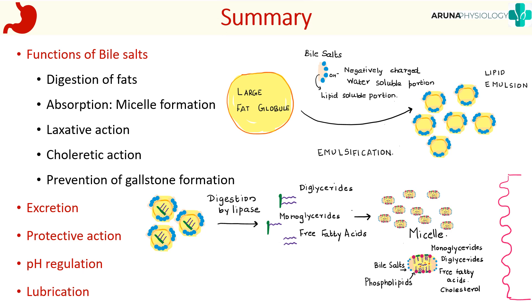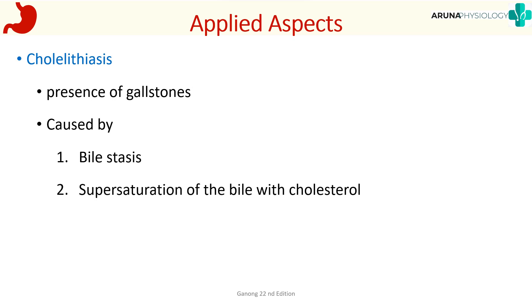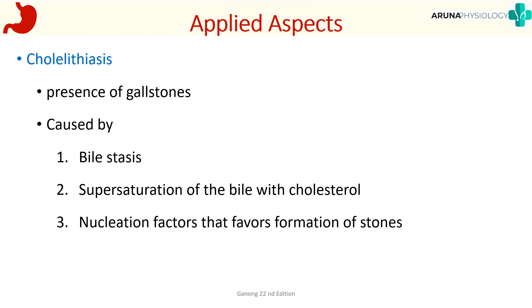Other functions of bile include excretion, protective action, pH regulation, and lubrication. Finish your answer with an applied aspect: cholelithiasis. Many factors help prevent gallstone formation, but in cases of stasis, illness, or infection, gallstones can form — this is called cholelithiasis. It is caused by bile stasis, supersaturation of bile with cholesterol, and nucleation factors that favor stone formation.